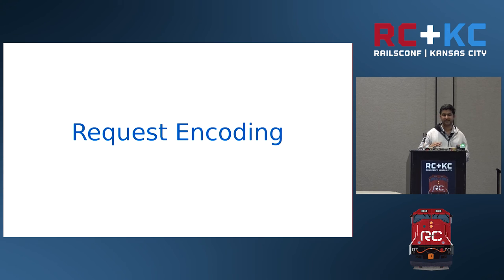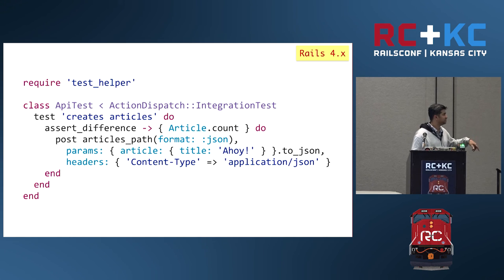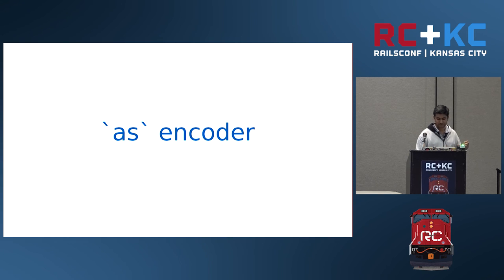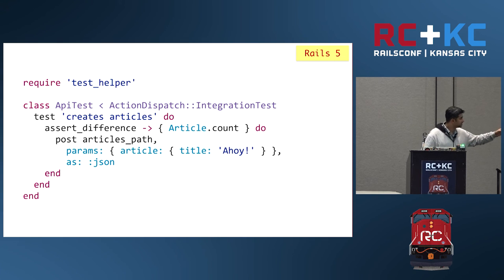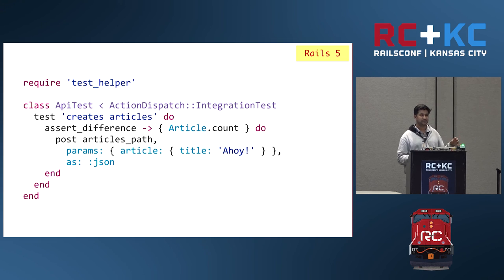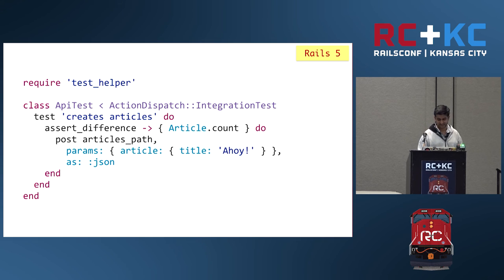In Rails 5, we have a way of encoding the request. If we want to send a JSON request, we can just tell Rails to encode the request as JSON. We just specify the encoder as a keyword argument — pass `as: :json` — and it will take care of all the magic behind the scenes: set the proper headers, do the request encoding, and send the JSON request properly.